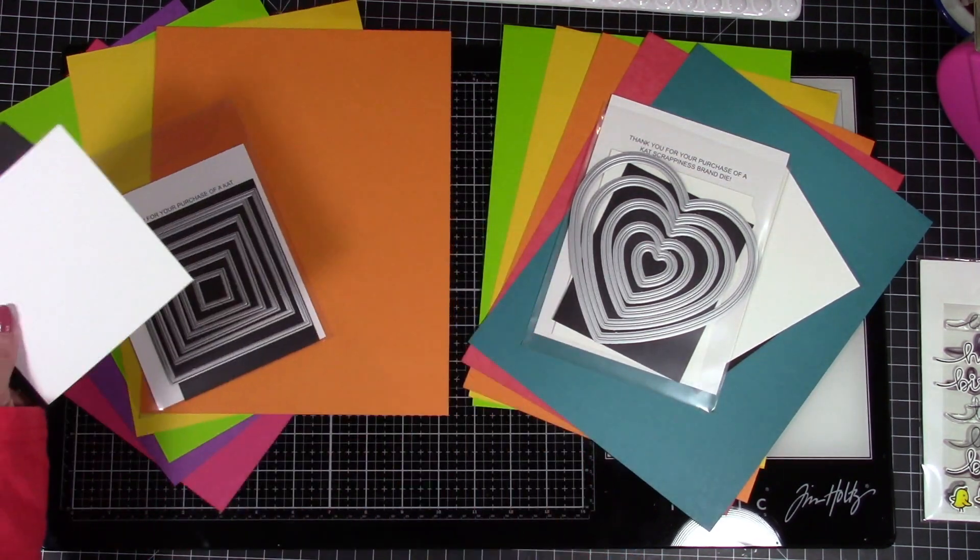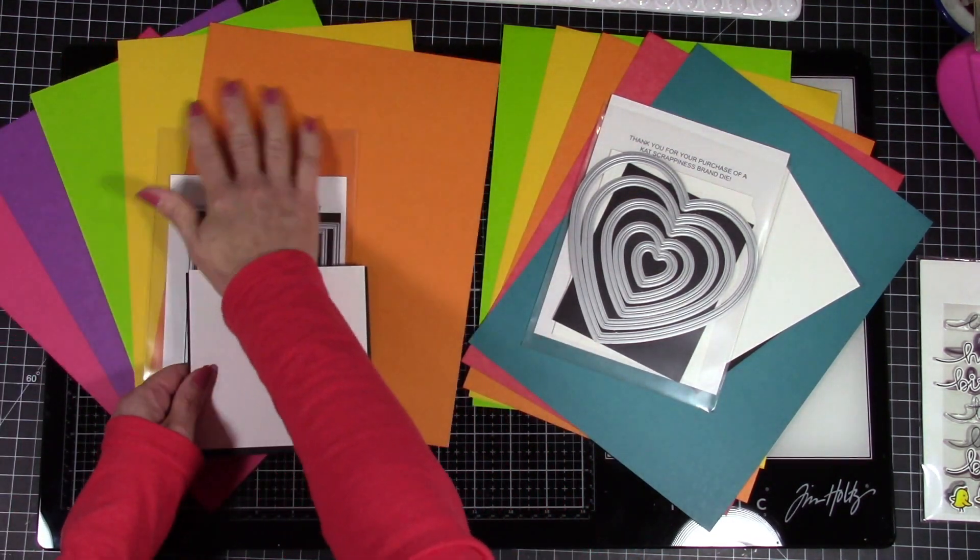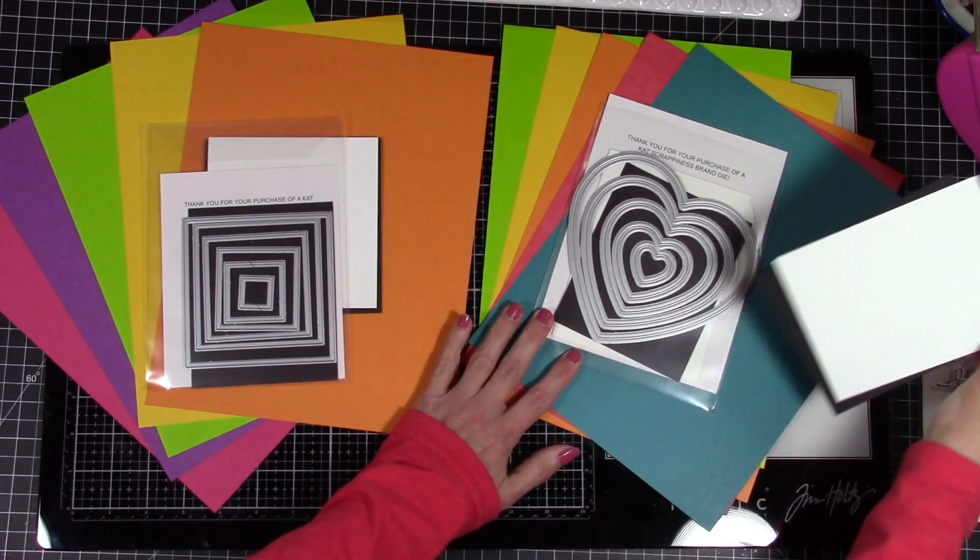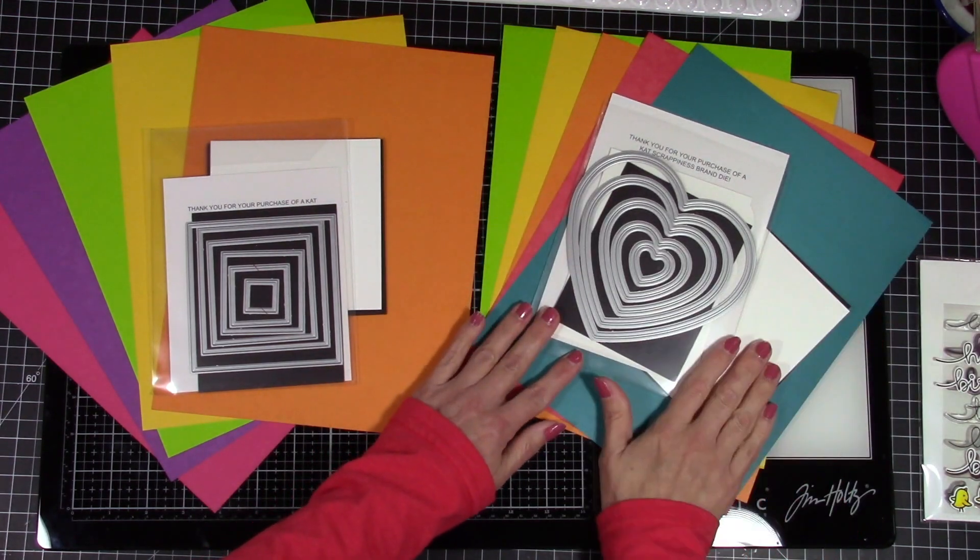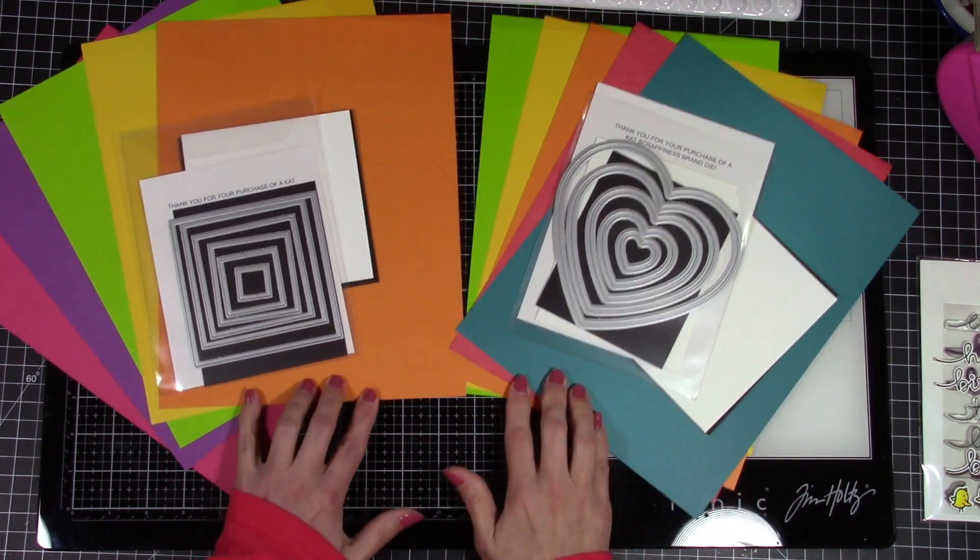So I'm going to use the embossed heart dies and the embossed edge square dies, but you've got the ovals and the circles and the rectangles as well. So whatever you've got is going to work perfectly.